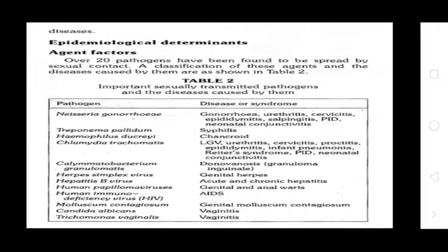Epidemiological determinants: Agent factors — over 20 pathogens have been found to be spread by sexual contact. A classification of these agents and the diseases caused by them is provided in Table 2: Important Sexually Transmitted Pathogens and Diseases Caused by Them.